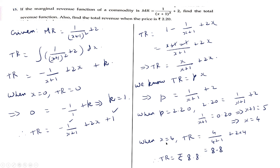When x is directly given, we can find total revenue directly. When price is given, we first find the corresponding output from the demand function, then compute total revenue. I hope this video was useful for you. Similar questions were asked in the sample paper, so it is better to practice these types of questions. Thank you for watching.